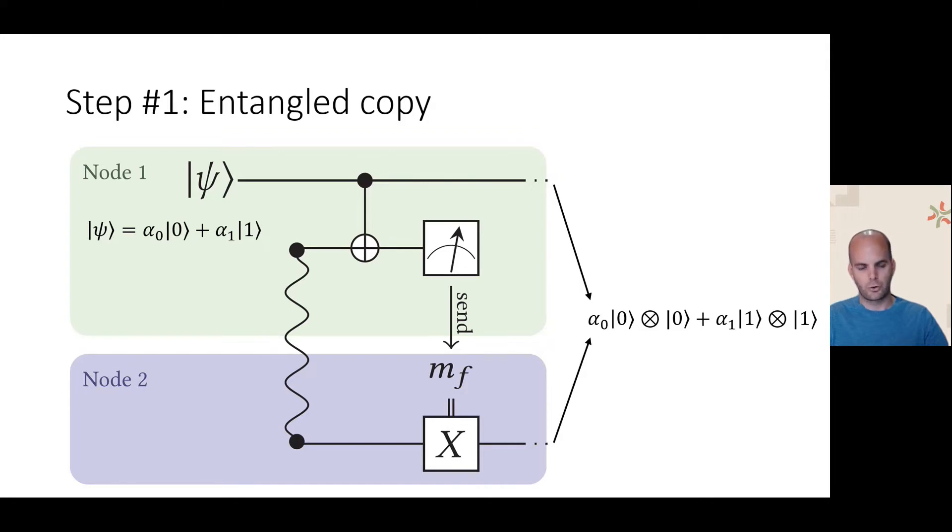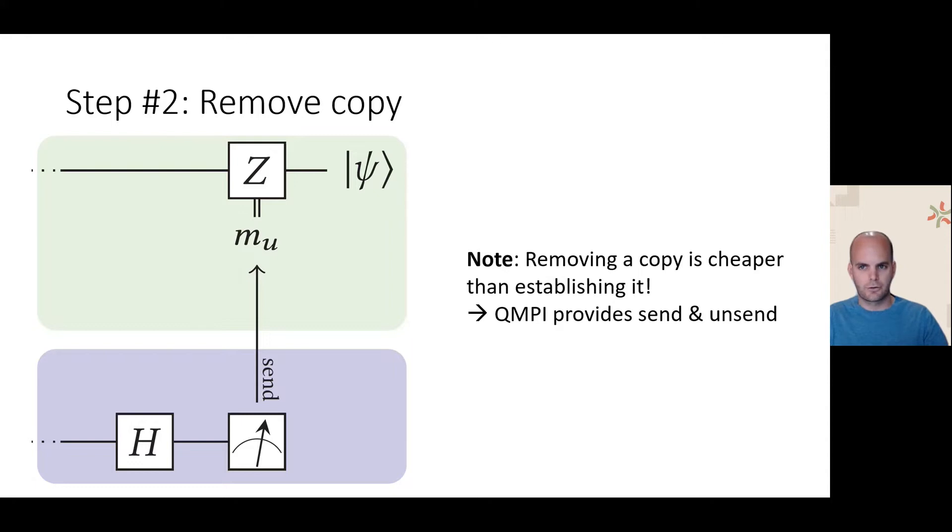After these steps, the total quantum state will be alpha zero ket zero ket zero plus alpha one ket one ket one, which means we have fanned out our qubit on node one to node two. This entangled copy can be removed using a simple measurement in the X basis, followed by a conditional Z correction. Note that eliminating a copy is cheaper than creating one, since we don't need an EPR pair to remove a copy.